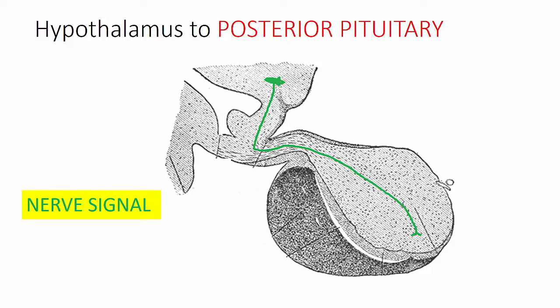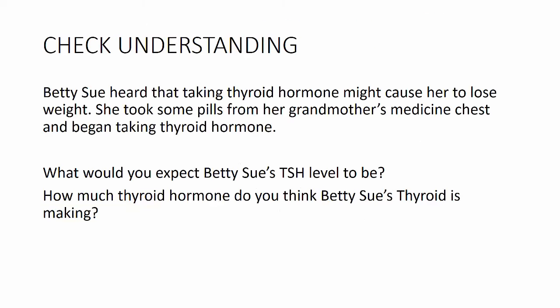Let's check your understanding of negative feedback. Betty Sue heard that taking thyroid hormone might cause her to lose weight, so she got some thyroid hormone medication from her grandmother's medicine chest and began taking it. What would you expect Betty Sue's TSH level to be once she starts taking this thyroid hormone? And how much thyroid hormone do you think her thyroid is now making? Pause the lecture here and see if you can work through the answer.